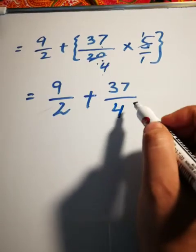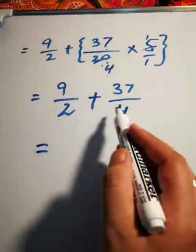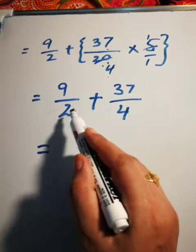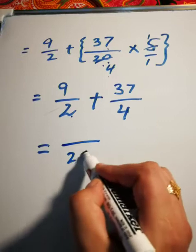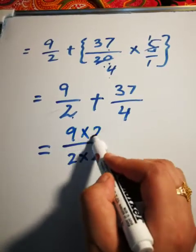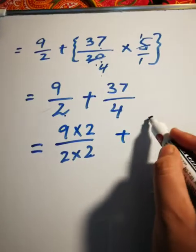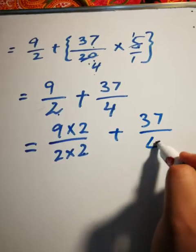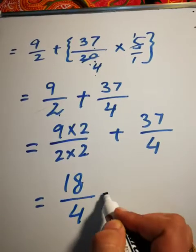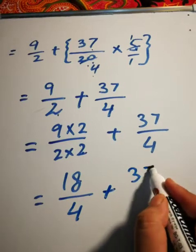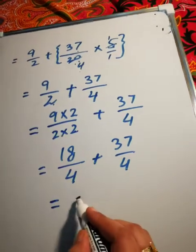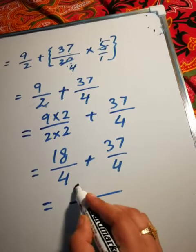Again we will make the denominator same. For making it, it is 4, it is 2. How can we make 2 to 4? We multiply 2 down, same number we will multiply up, plus 37/4. 9 times 2 is 18, 2 times 2 is 4, plus 37/4. Denominator is same so we can add it.